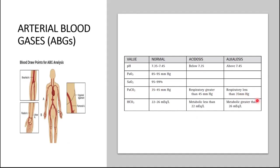The last value is our bicarbonate, HCO3. The normal range should be between 22 and 26. Bicarbonate — just as the name sounds, like sodium bicarbonate — is a base. It is a metabolic base, it's alkaline, it's an antacid, it's the other side of acidity.